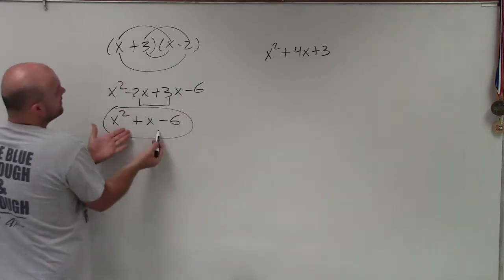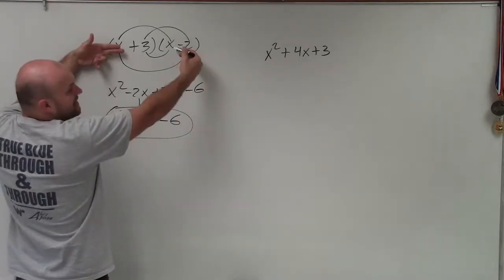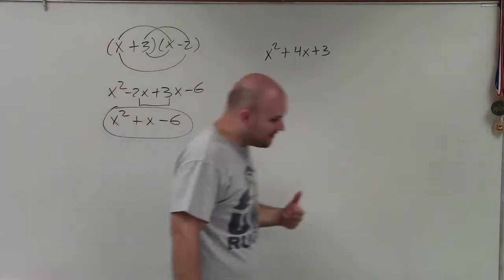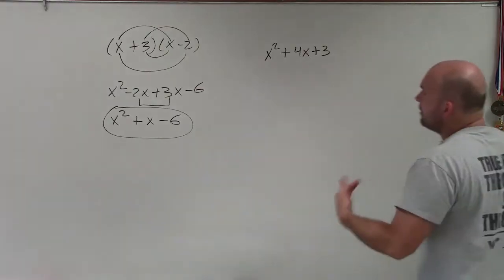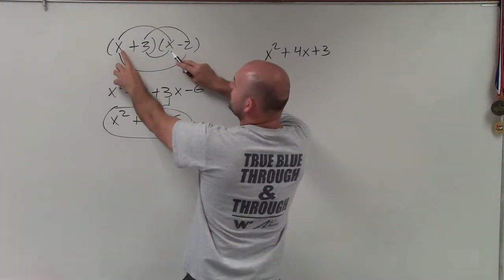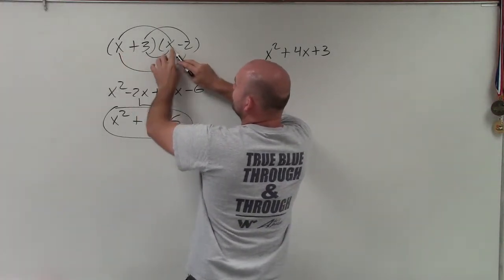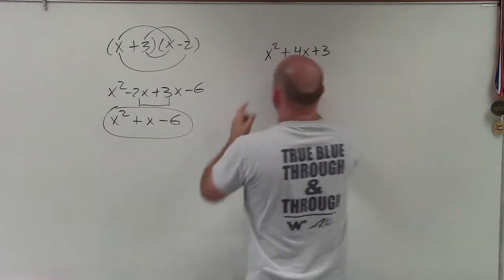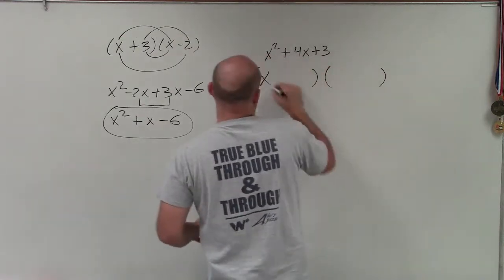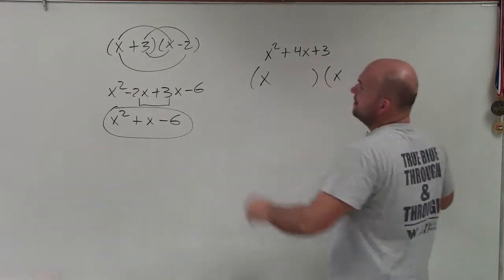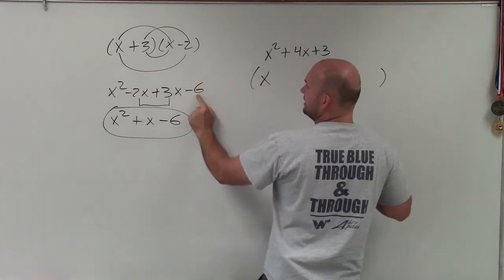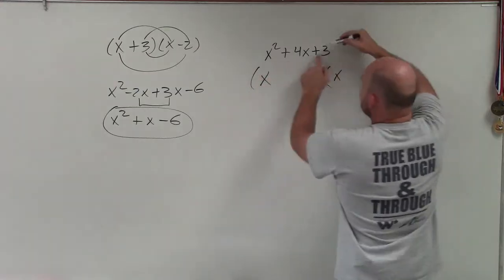Now what we want to do is, given a trinomial, go back to the product of its two factors. What we notice is these two numbers multiply to give us x squared — so we have x times x. And the product here gave us the constant, negative 6.